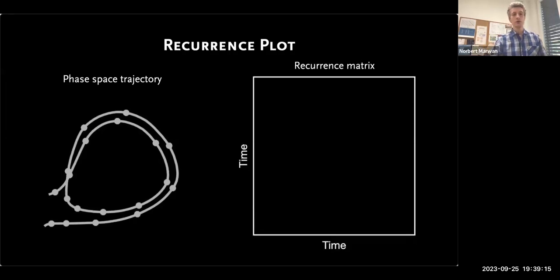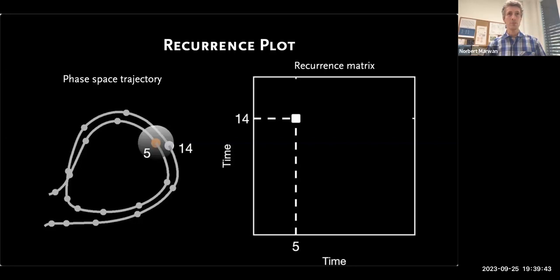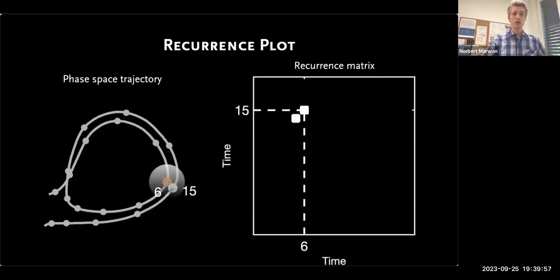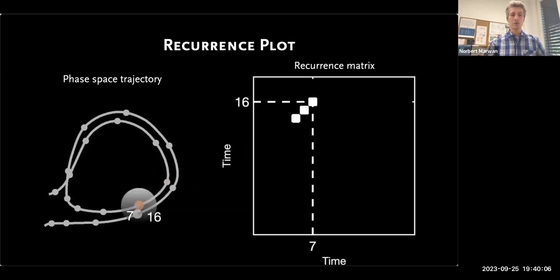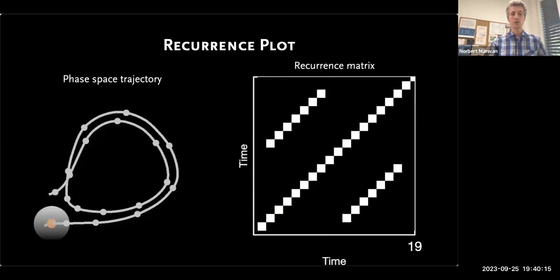What makes a recurrence plot special? Consider a short part of the phase space trajectory and one state at time 0.5. We have a recurrence matrix — a square matrix where each column and row corresponds to a time point. We look for all neighbors that fall within some neighborhood of this time point. For example, the state at time 0.14 falls inside this neighborhood, so we mark an entry of 1 in the recurrence matrix. We proceed through all states along the phase space trajectory, marking combinations of close time points, and we get the recurrence plot.